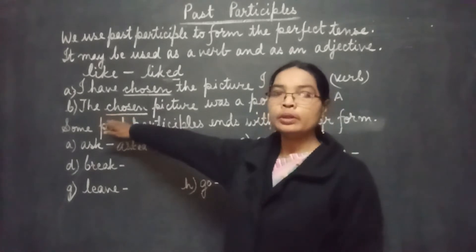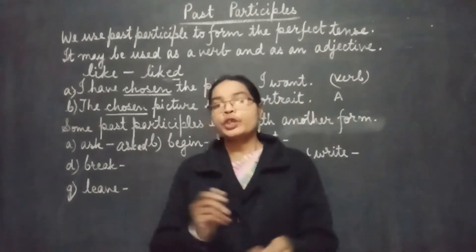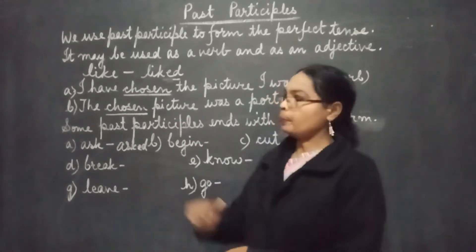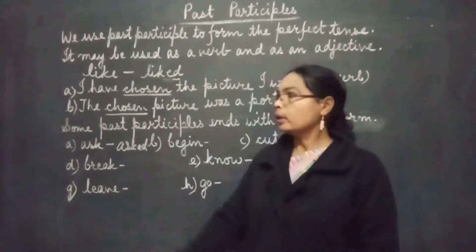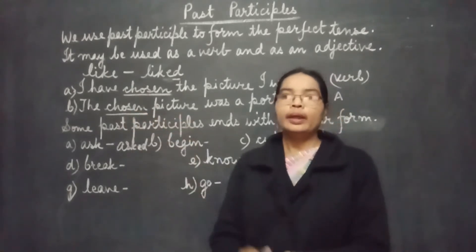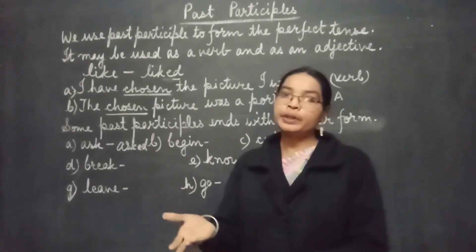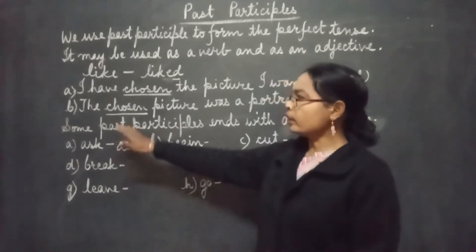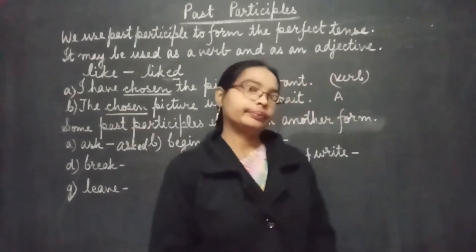Come to sentence number B: 'The chosen picture was a portrait.' Which type of picture? The word 'chosen' describes the picture — it tells something about the noun 'picture'. The word which tells about a noun is an adjective. So here in sentence number B, the word 'chosen' works like an adjective.